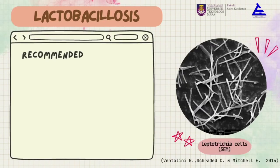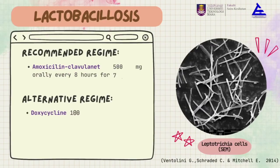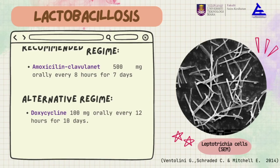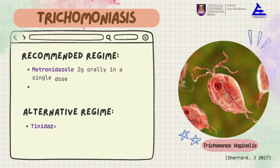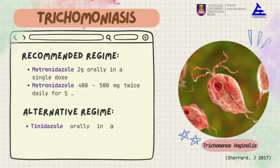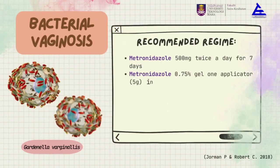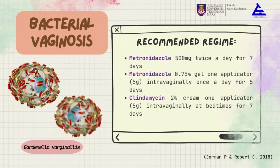For management of infection: for Lactobacillosis, the alternative regime is for people who are allergic to the penicillin class of antibiotics. For Trichomoniasis, the alternative regime is denazol, which is more expensive compared to metronidazole but gives more favorable gastrointestinal side effects. For bacterial vaginosis, standard treatment options also apply.